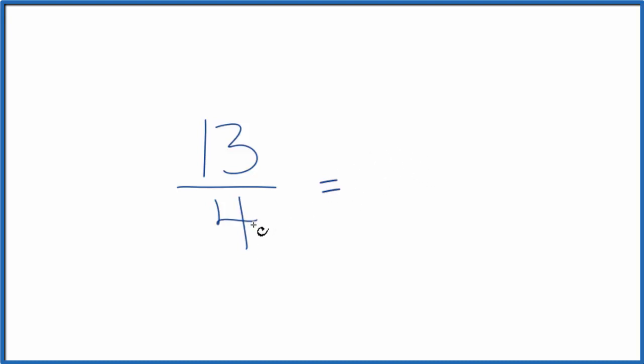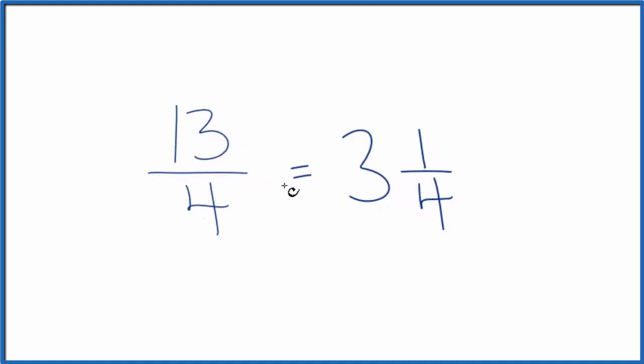So I could take and divide 4 into 13. 4 times 3 is 12, so 4 goes into 13 three times, and we have 1 left over. 13 minus 12 gives us 1, so 1 left over. We call this 3 and 1 fourths. That's the mixed fraction for 13 over 4.